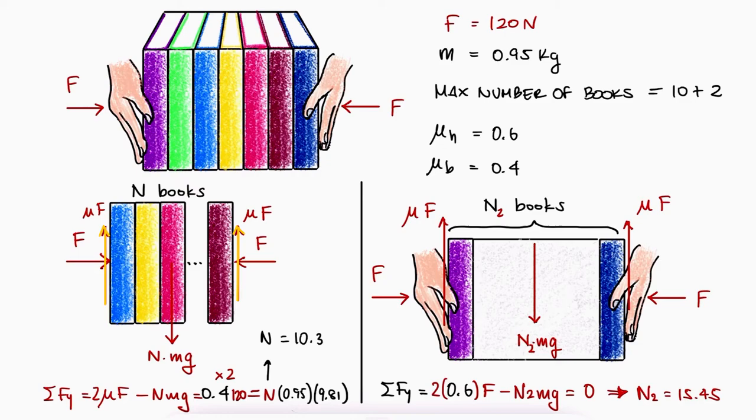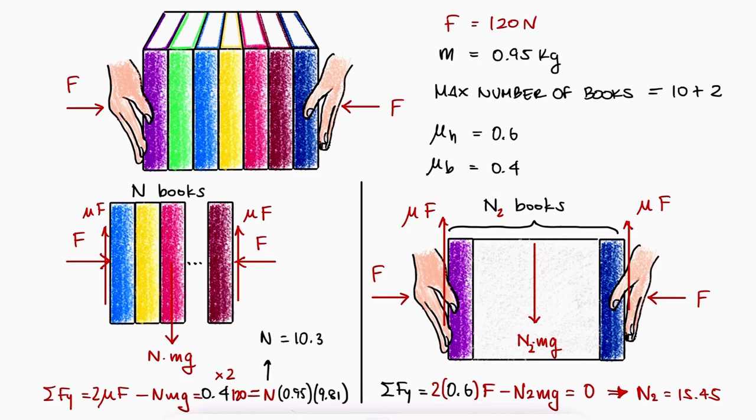The 15.45 answer we get from N2 just means that the books at both ends held by hands are not gonna slip as long as the number of books between the hands is lower than 15.45.